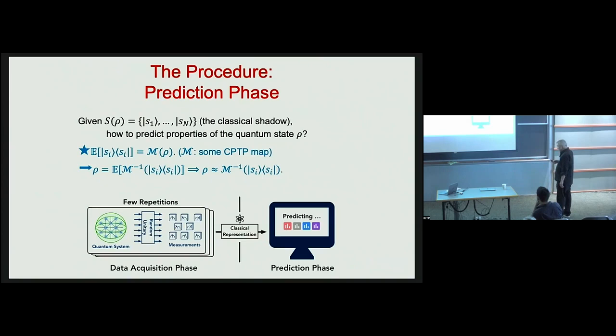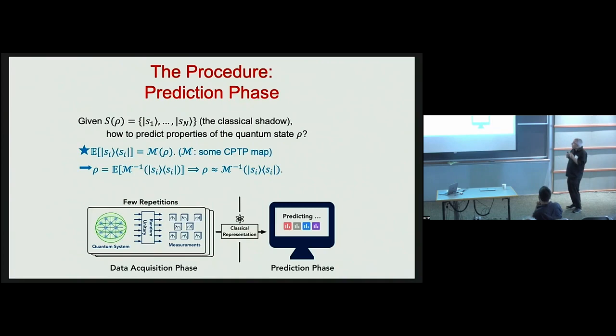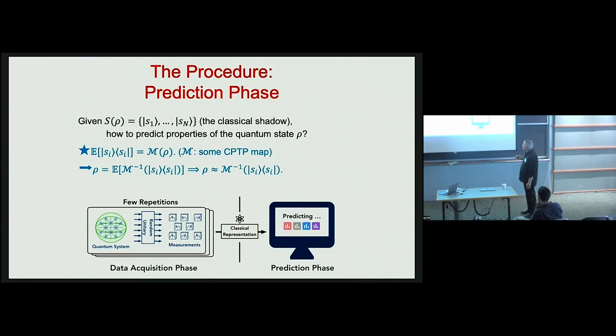If we apply the inverse of the channel to all of our snapshots, then the expectation value of those inverted snapshots is just the input density operator defined by the protocol. So if I want to estimate the expectation value of some observable — particularly one I can describe succinctly classically — I can calculate the expectation value for each of these inverted snapshots. By averaging over the choice of measurement and the measurement outcomes, I obtain an unbiased estimator for that property of the density operator.